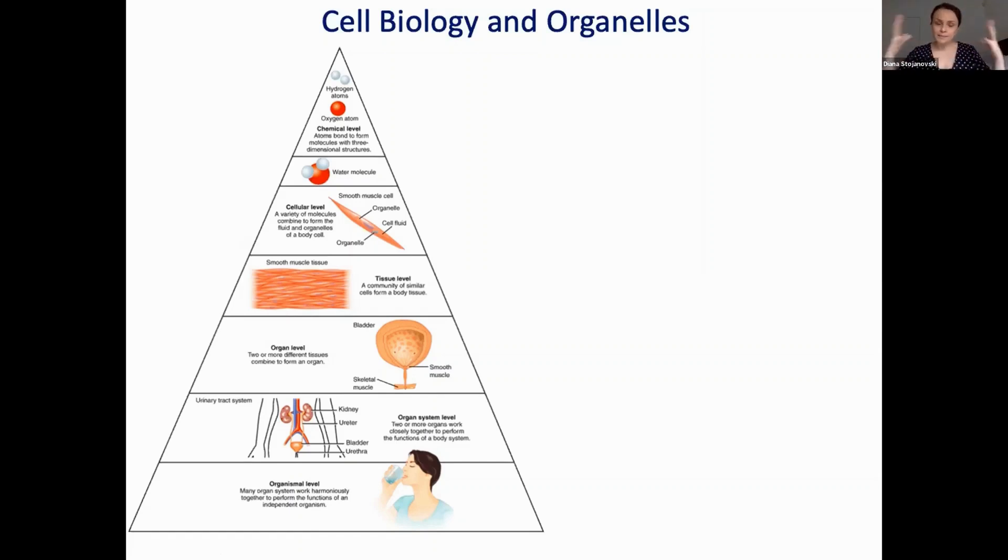These systems work together, they collaborate to ensure that the human being can survive. But we can break these systems down to one level lower, and that is the organ level. If we look at every system in our body it is composed of multiple organs. You can see here in this urinary tract diagram the urinary tract is composed of the bladder, the kidneys, the urethra and so on, and these multiple organs obviously make up this system.